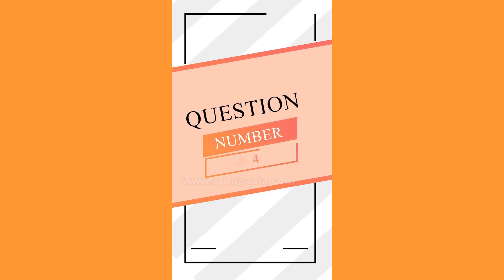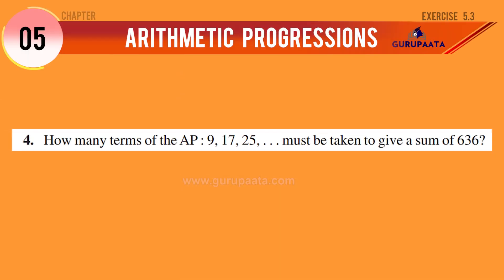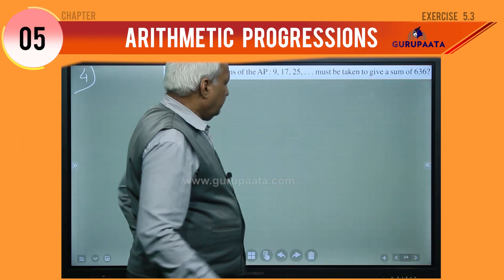Our next question is question number four. How many terms of the AP 9, 17, 25, etc. must be taken to give a sum of 636?